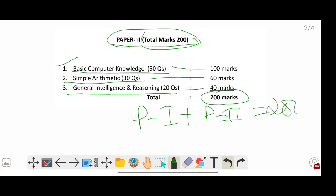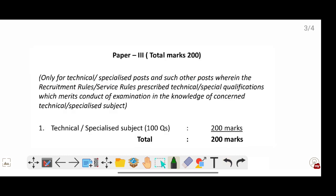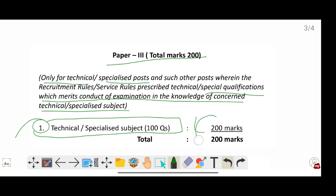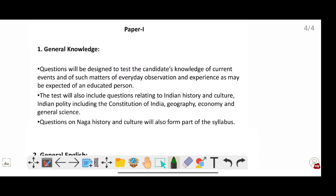Next paper, that is Paper 3. Total marks will be 200, only for technical specialized posts. So specialized qualification which merits conduct of examination in the knowledge of the concerned technical specialized subject. In the advertisement they will mention, and marks will be 200. So there will be an extra paper, that is Paper 3, for technical candidates. Now let's look at the detailed syllabus.